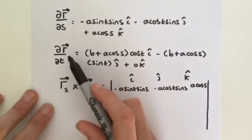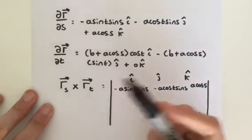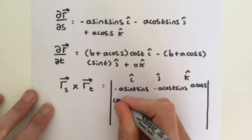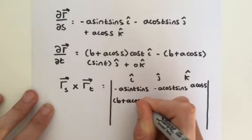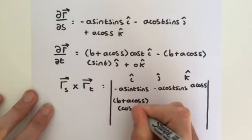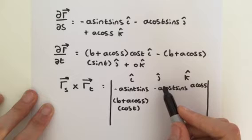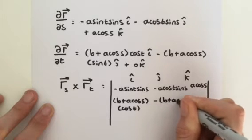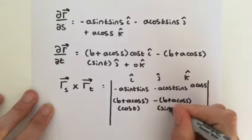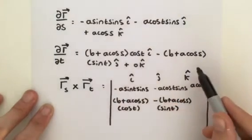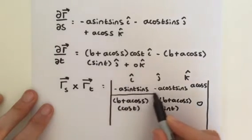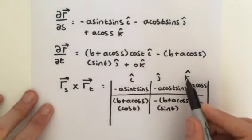Now, we look at our partial derivative with respect to t. So, the i component with respect to t is simply b plus a cosine of s, multiplied by the cosine of t. Then for our j component, we simply have minus b plus a cosine of s, times the sine of t. And then for our k component, or z component, we just have zero. How about I put that in a more clear format, just separate them.